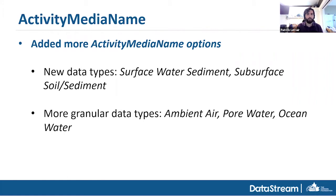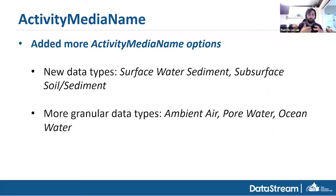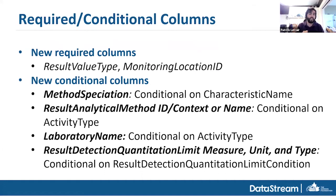In addition to sediment types, we've added more granular data types. Before, surface water incorporated basically everything, which led to issues — we were putting things like air temperature and precipitation under surface water because that was the only option. We were also putting marine data under surface water, which creates problems when comparing guidelines. So we added ambient air for climatological data, pore water for water removed from soil cores, and ocean water for salty or marine data.